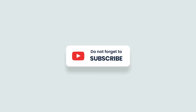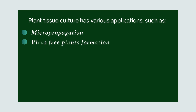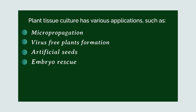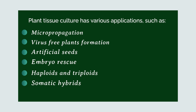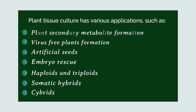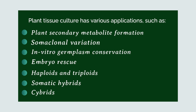Plant tissue culture has various applications: 1. Micropropagation, 2. Virus-free plant formation, 3. Artificial seeds, 4. Embryo rescue, 5. Haploids and triploids, 6. Somatic hybrids, 7. Cybrids, 8. Plant secondary metabolite formation, 9. Somaclonal variation, 10. In vitro germplasm conservation.